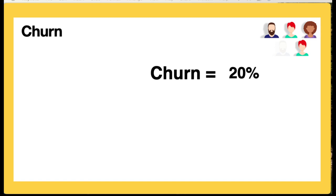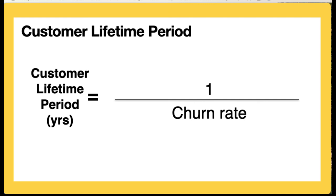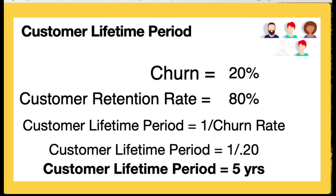Another way to look at this is the customer retention rate — how well are we retaining our customers? So we can say our customer retention rate is 80%. Having a high churn rate is generally not a good thing. The customer lifetime period — how long does that customer stay with us — is calculated as one divided by the churn rate. So in this case, one divided by 0.20 equals five years.